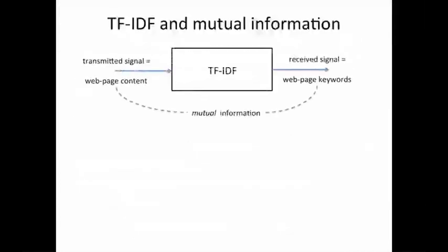Now let's see what TF-IDF has to do with mutual information. We have a transmitted signal, which is the content of the web page, and we want to compute the best keywords that should represent this web page so that the mutual information between the content and the web page keywords is high. Our channel in this case is TF-IDF, and we're trying to figure out what this channel does in terms of maximizing the mutual information.